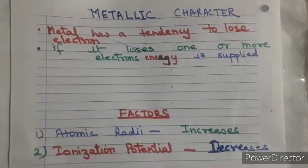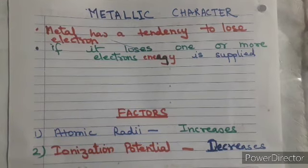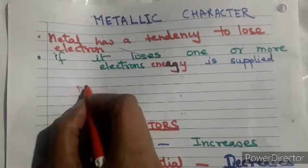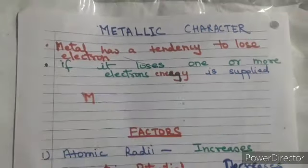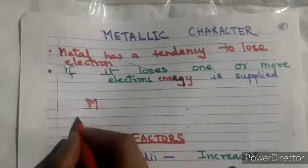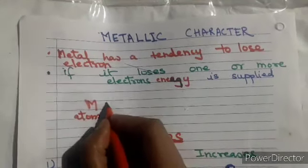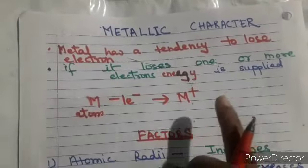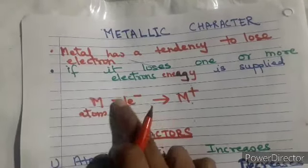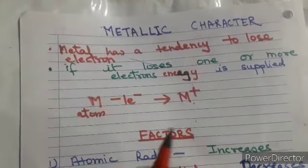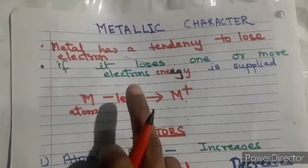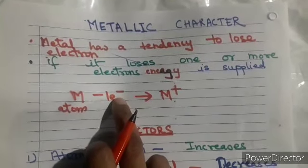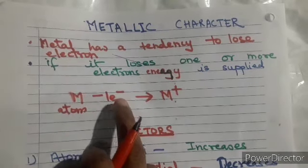We know that metals — I am representing metal with M, indicating the atom of a metal. When we remove an electron from it, it acquires a positive charge. Metals always lose electrons and acquire a positive charge. When this electron is removed from the outermost orbit, the energy required is known as ionization potential or ionization energy.